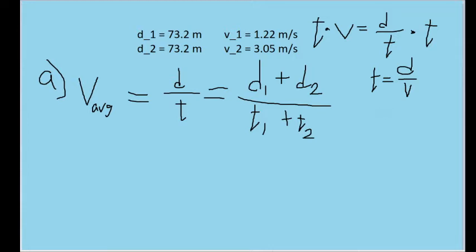Now we have what we'll need to evaluate this equation here, because D1 plus D2 is just going to be the two distances we were already given, so 73.2 meters plus 73.2 meters again.